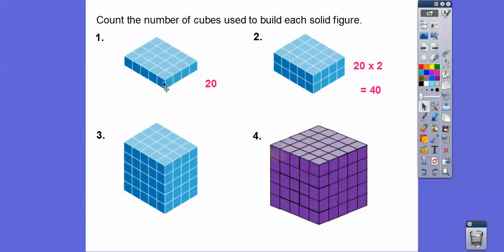This figure is the same as the last except stacked five times — one, two, three, four, five — so it's twenty times five. Since two times five is ten, twenty times five is one hundred.